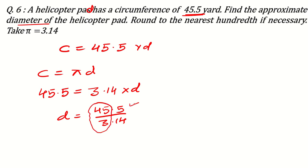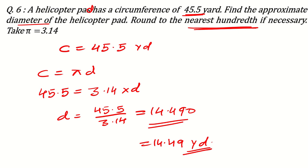But in the detailed question where you need to write something, there you will solve it completely. 45.5 divided by 3.14 is equal to 14.49. And basically it is 14.490. They are saying to round nearest hundredth. So it will be the answer. 14.49 yards. Like this, you can solve the question.